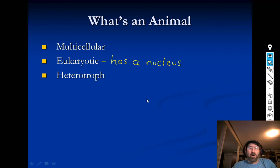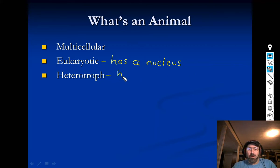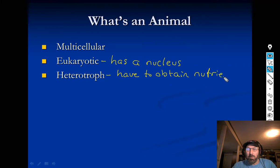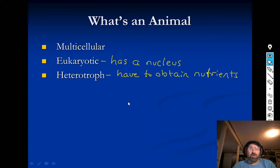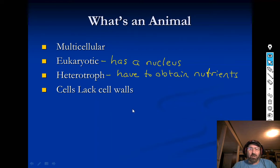All animals are also heterotrophs. That means we have to obtain nutrients by eating. We can't make our own food like a plant can. We have to get our energy from some other source. We also lack cell walls — our cells have a cell membrane, but no cell walls.